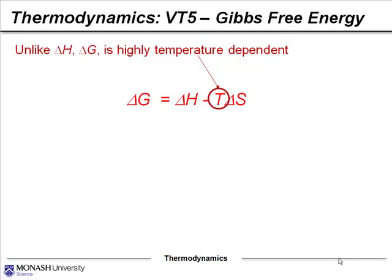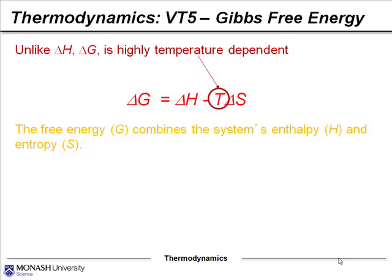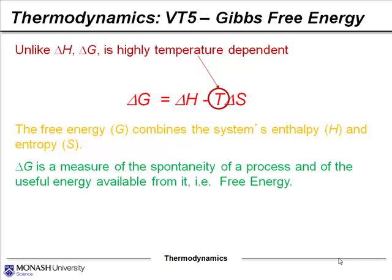Unlike enthalpy, the Gibbs free energy is highly temperature dependent because the temperature term appears in the equation. The free energy combines the system's enthalpy and entropy together. ΔG is a measure of the spontaneity of a process and of the useful energy available from it — hence the term 'free energy' — and it's all we need to determine spontaneity.